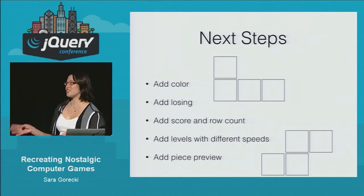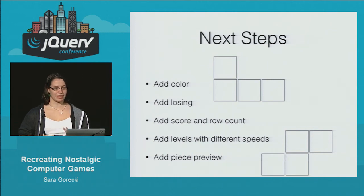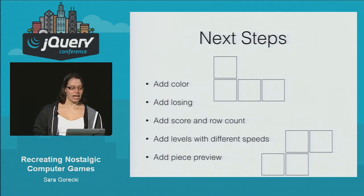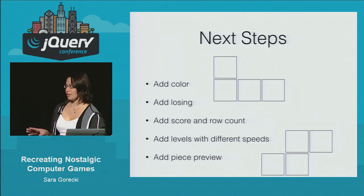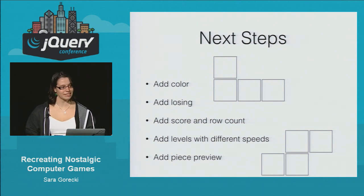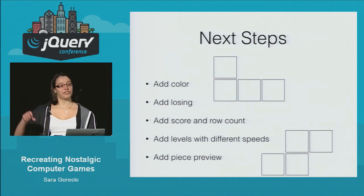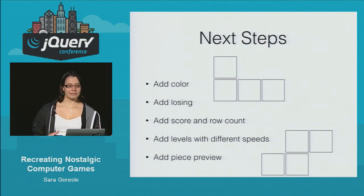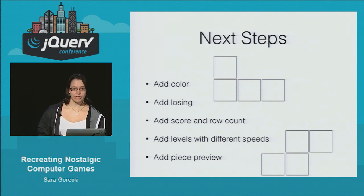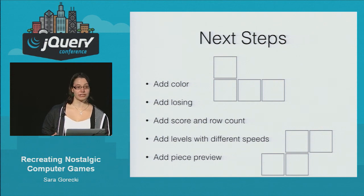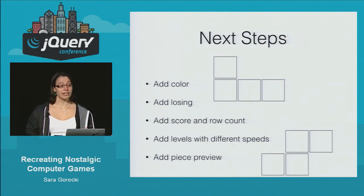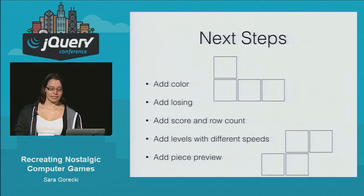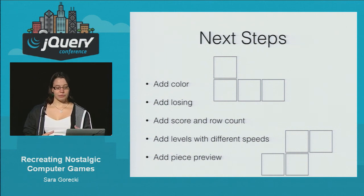There are extra features I want to add to my Tetris game: I want to make the pieces different colors, add a losing condition — right now it just goes to the top and nothing happens — make the score actually keep track of how well you're doing, and add a piece preview so you see what's coming next. These are all manageable by keeping all the game logic isolated. For Spider Solitaire, whenever I tried to add new features, having all the data only in the DOM made it really complicated. But for Tetris, keeping it all isolated makes it really easy to add improvements and features.